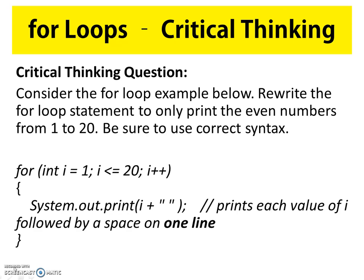Now that we understand how a for loop works, we're going to look at a critical thinking question also listed in your video review. It says: 'Consider the for loop example below. Rewrite the for loop statement to only print the even numbers from one to 20, and be sure to use correct syntax.' The only modifications needed to make this for loop work as asked might surprise you.